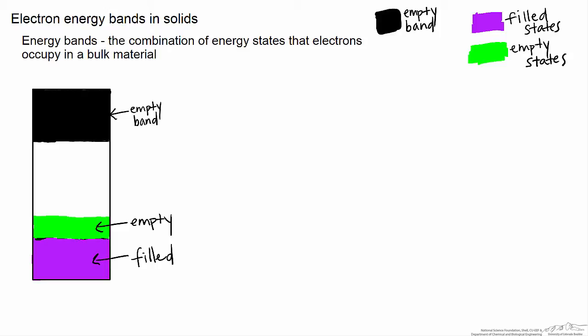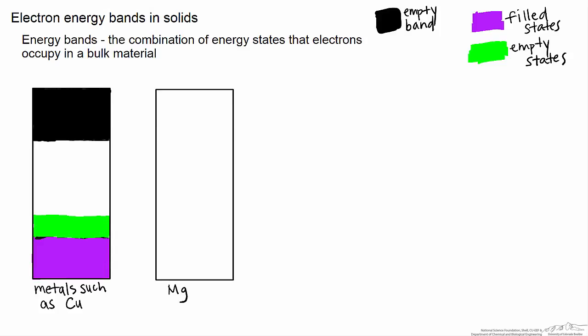metals such as magnesium have a filled 3s orbital. However, there is an adjacent orbital, the 3p orbital, that can accommodate electrons. Though this orbital overlaps, it does take a little bit of energy to get electrons into it,